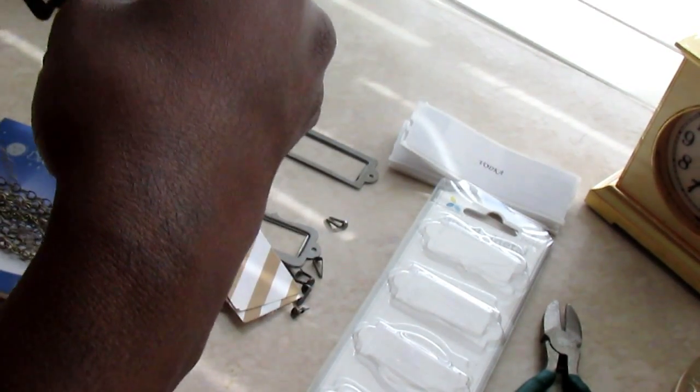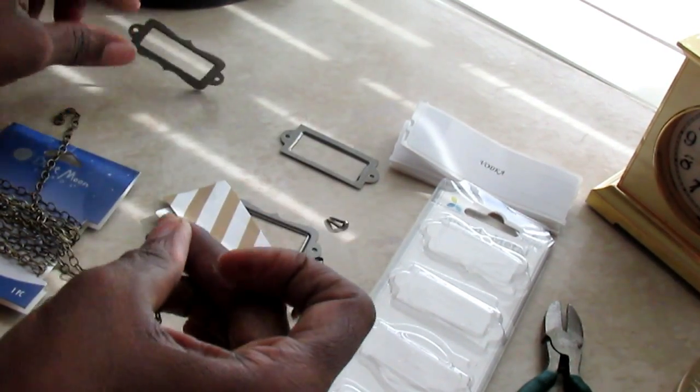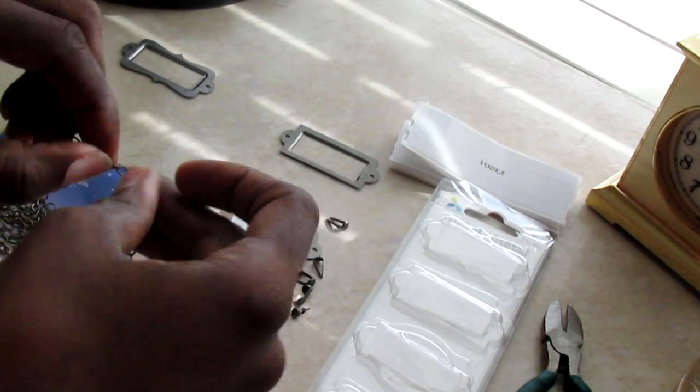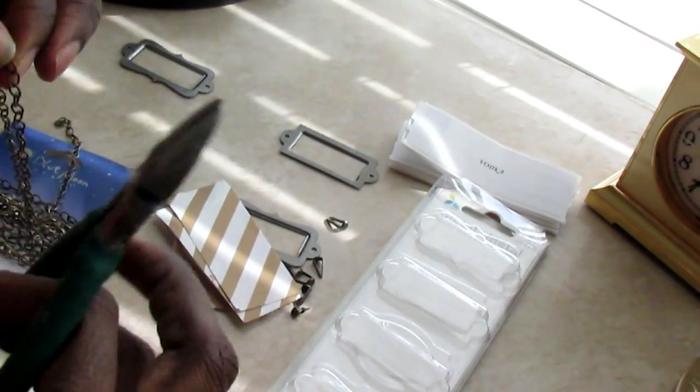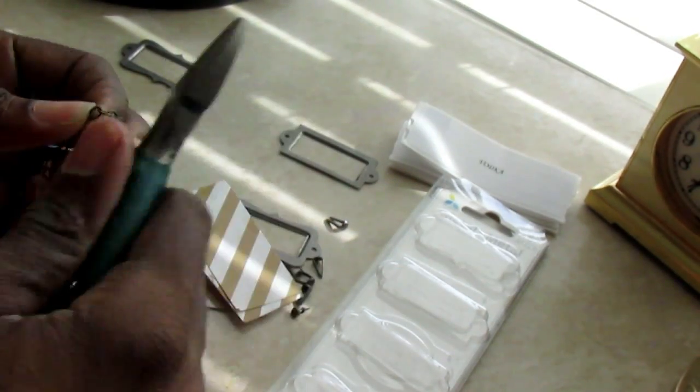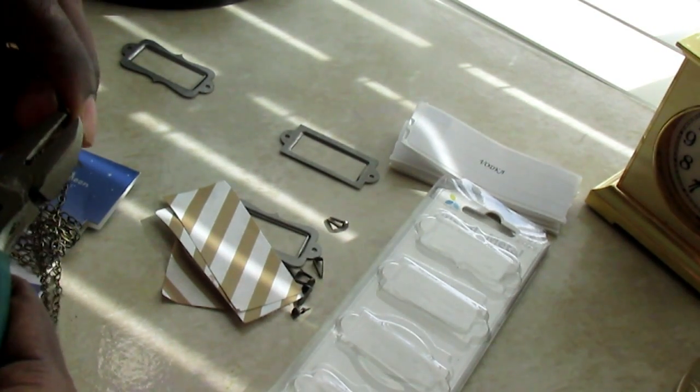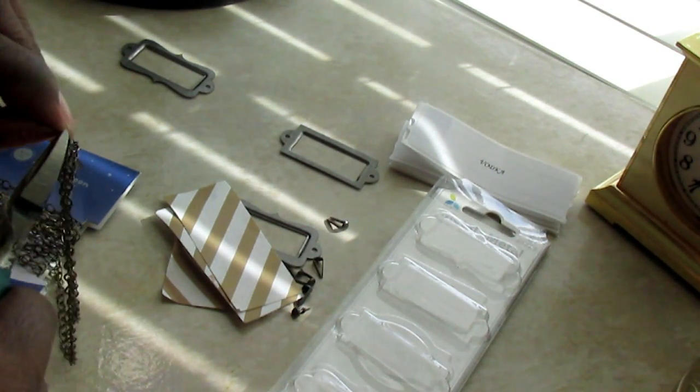Now that you know how long you want your decanters to hang, we will take the wire cutters and open one of the loops on the chain strand so that we can slide it onto the hole of the metal tag.